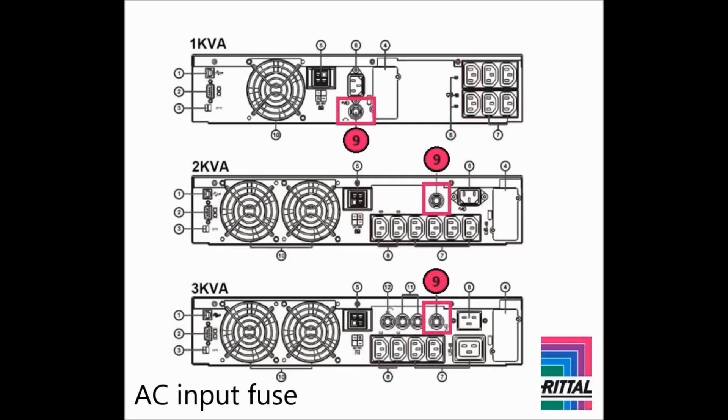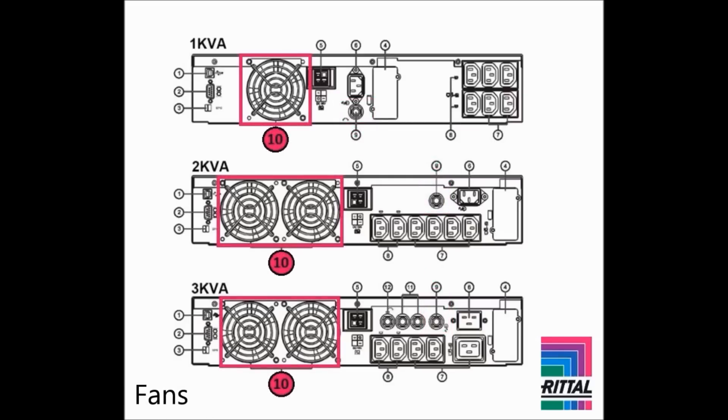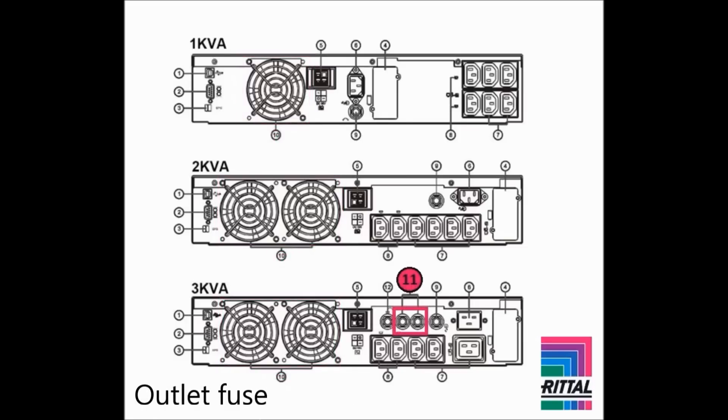The input of the UPS is protected by a fuse fitted in the AC input fuse holder. Depending on the model, the PMC-12 is fitted with one or two cooling fans. The outlets of the 3 kVA model are protected by fuses fitted in the outlet fuse holders. This model also has a fuse holder for the programmable outlets.